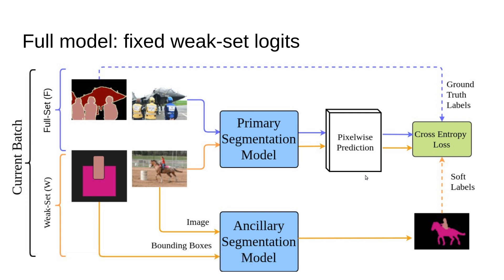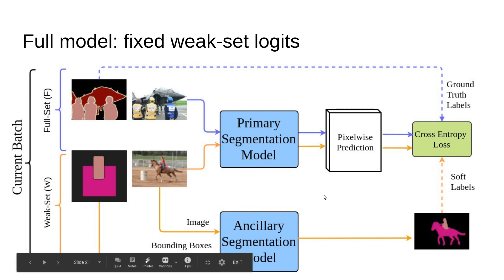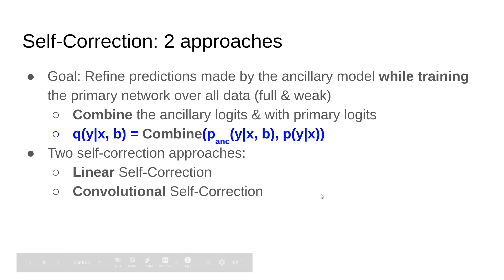In summary, for fully annotated images, use the ground truth. For weakly annotated images, generate ground truth for it.